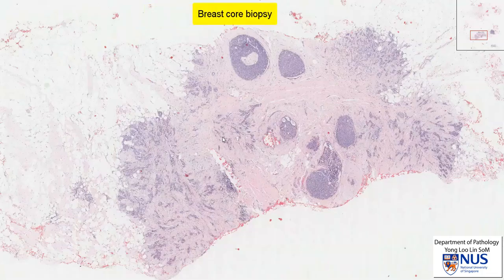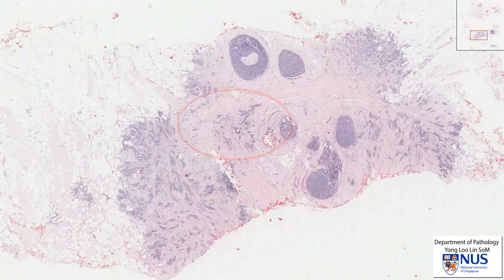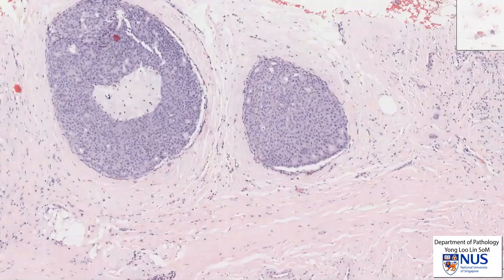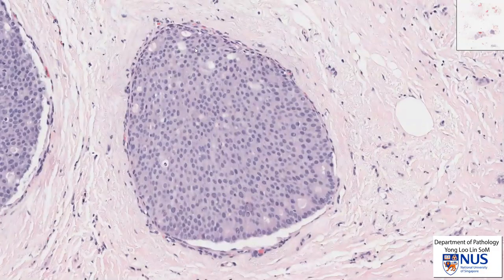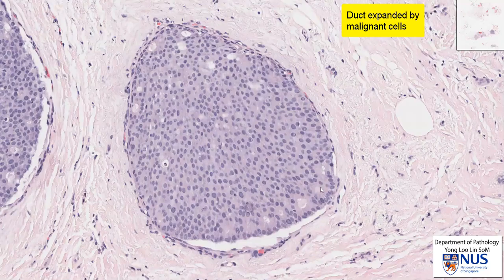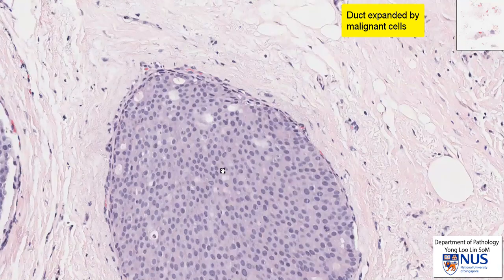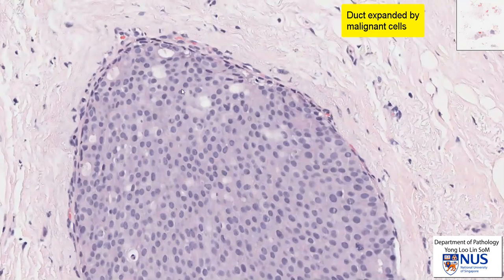Moving back to this core biopsy, we will first look at these large expanded ductile structures, and then zoom in on these irregular nests of cells within the stroma. You can see that this very large expanded duct is almost entirely filled with cells. In some areas there is lumen formation, and in other areas it appears more solid. It is very rounded, and if we look carefully at the periphery, we can make out cells which are smaller and blander than those filling up the ductile structure.